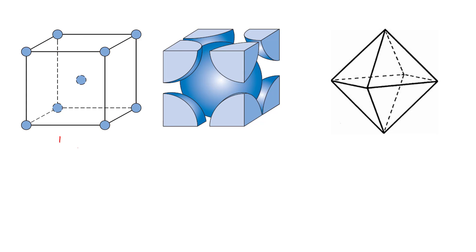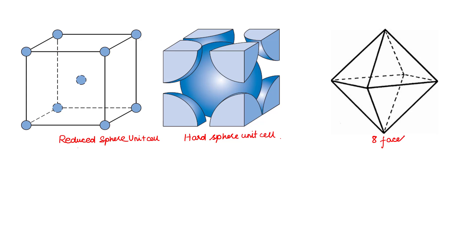The schematic of the reduced sphere BCC unit cell is shown, and the hard sphere unit cell is also shown. As we know, body-centered cubic is the crystal structure having atoms located at all eight corners of the unit cell and one atom at the body center. Also, an octahedron is a polyhedron having eight faces, 12 edges, and 6 corners.